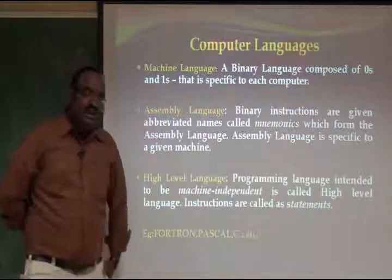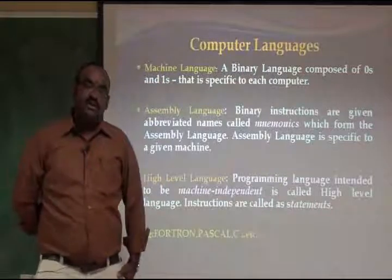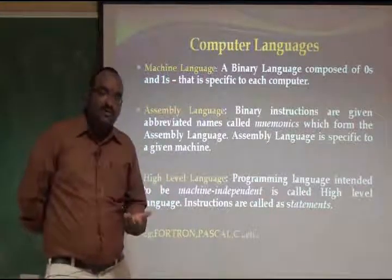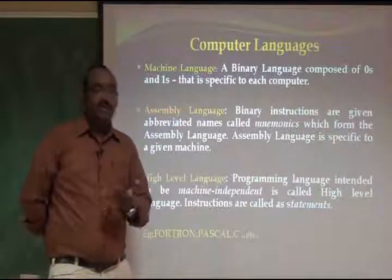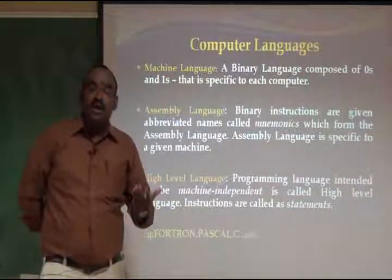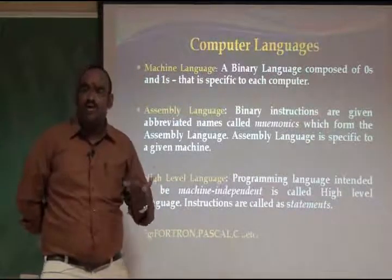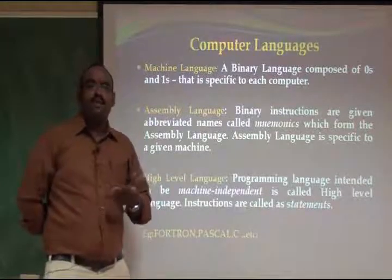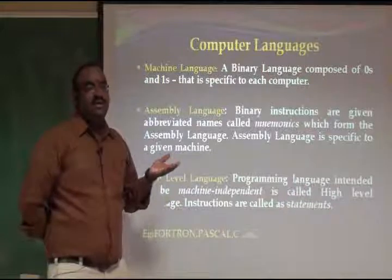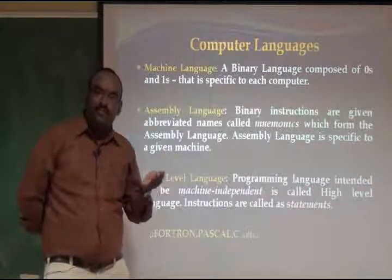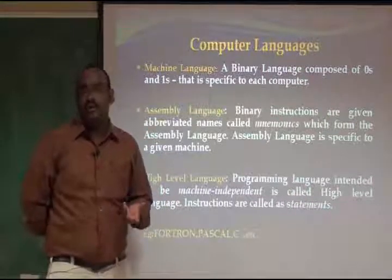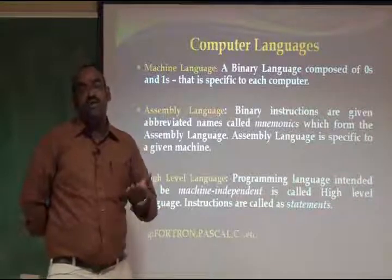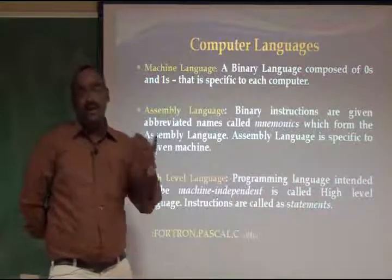Then, assembly language — assembly language is mainly for the microprocessor. The microprocessor is machine dependent. There are many types of microprocessors; the first were the 8085, 8086, and 8088. Now we use many Intel processors such as Core 2 Duo and multiprocessors. The code written for the microprocessor is called mnemonics. Mnemonics is a form of assembly language, which is converted into machine language by the assembler.